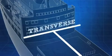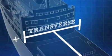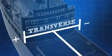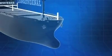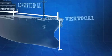Transverse is the horizontal direction across the beam of a ship. Transverse distances are measured port or starboard from the centerline, with one written as a positive distance and the other as negative. It is not standard which is which, however, and this varies from ship to ship as well. Vertical distances on a ship are measured upward from the baseline, or lowest point of the keel.